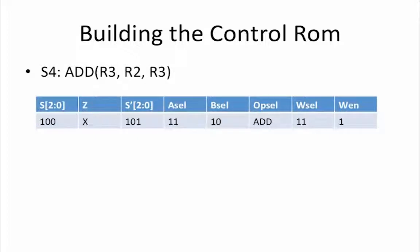For state 4, we have current state set to 100 and next state to 101. Asel equals 11, Bsel equals 10, Wsel equals 11 and WN equals 1. Our OPsel is once again add.